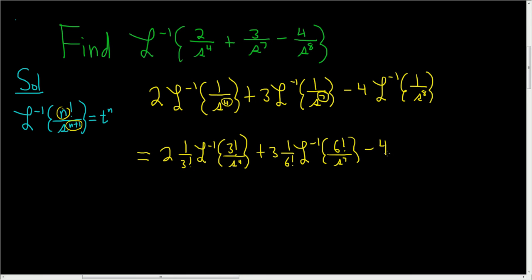And then minus 4, and then again I'll leave a space. We have the inverse Laplace. Here we have an 8, so 1 less would be 7, so 7 factorial. And here we have s to the eighth. And we have to multiply by 1 over 7 factorial.